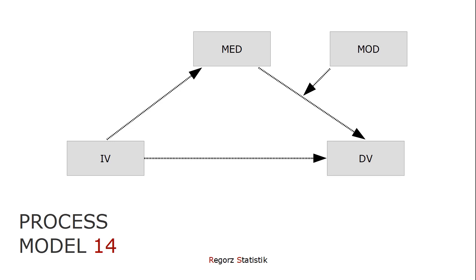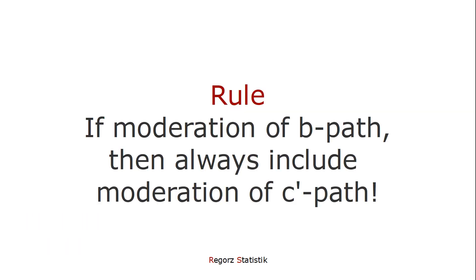Model 14 is useless. If it's significant, you don't really know anything. You know there is some moderation in the model, but for that you could just use process model 1. You don't know whether you have a moderation for the B path, the C prime path, or both — and process model 14 can't tell you that. Process model 15 can. So please stop using process model 14. As a more general rule, if you have a model in process with a moderation of the B path, always include a moderation for the C prime path as well.